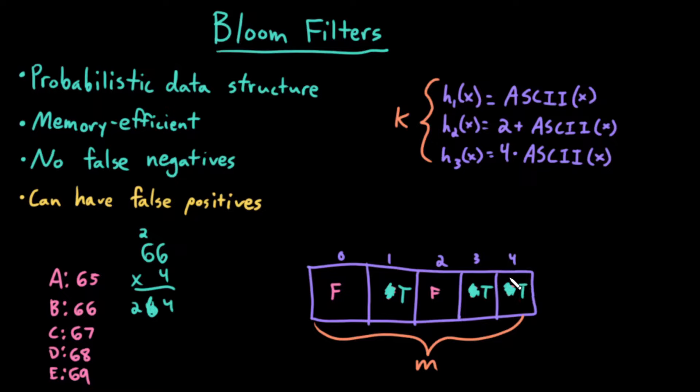So to insert an element, compute its hash value using each of the hash functions, and for each of those hash values mod it by the length of the array and set the corresponding index to true.